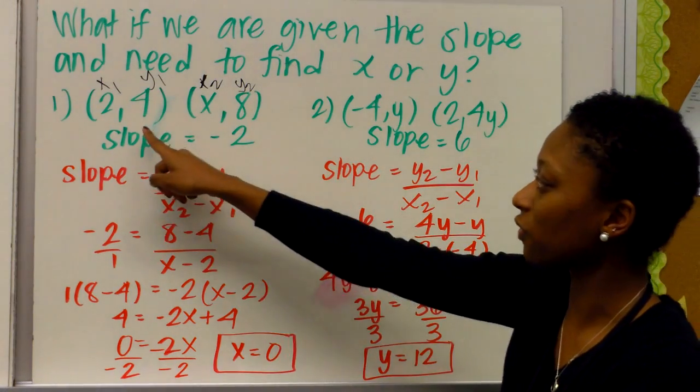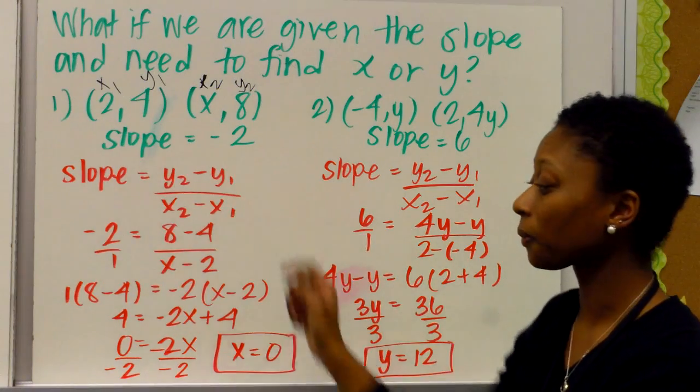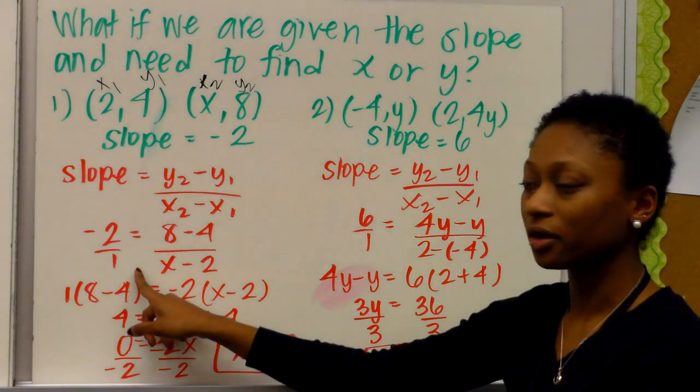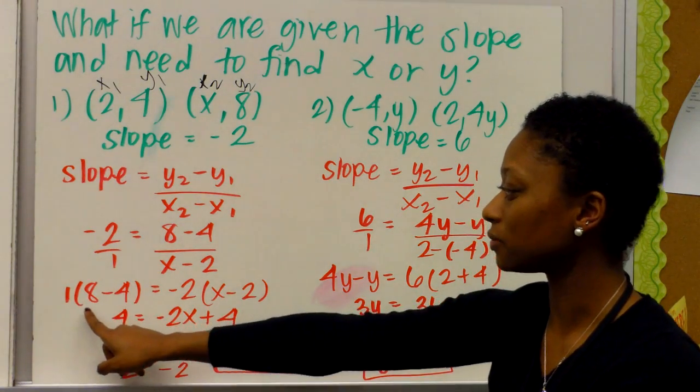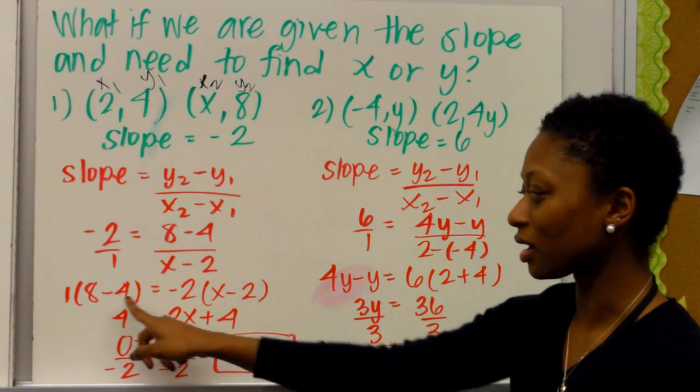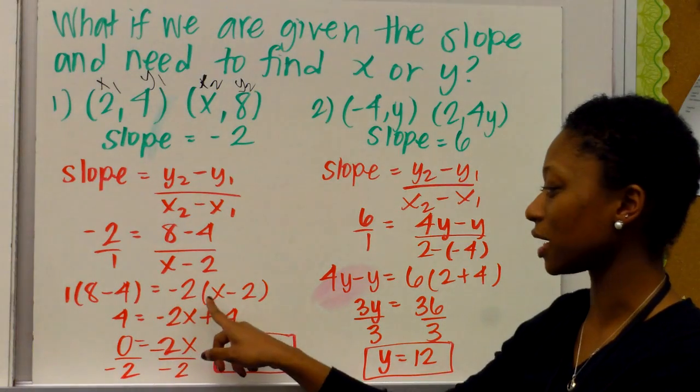So if I do 8 minus 4, I have to do x minus 2. So then, from there, we use a shortcut called cross multiplication, and do 1 times x minus 4, equals negative 2 times